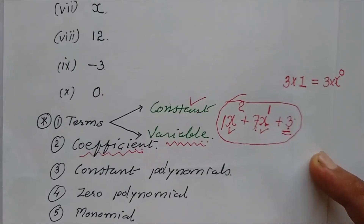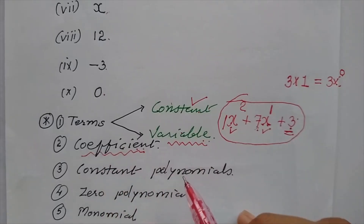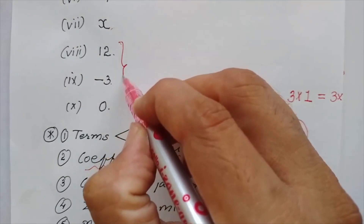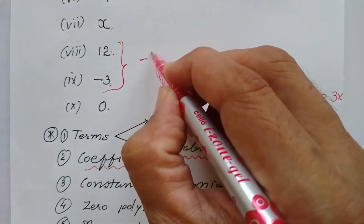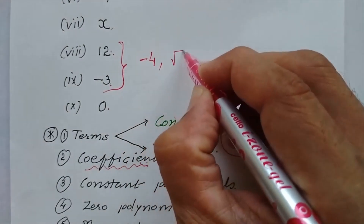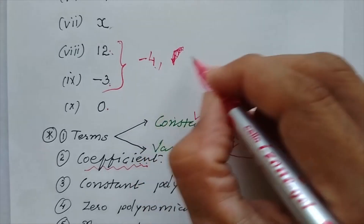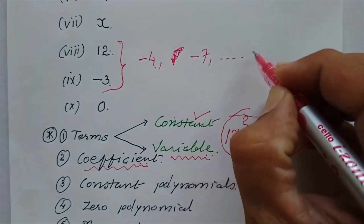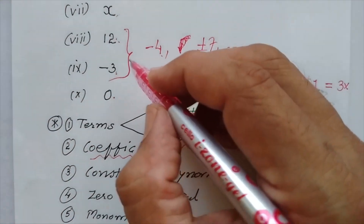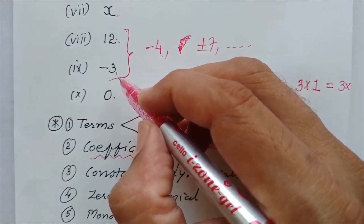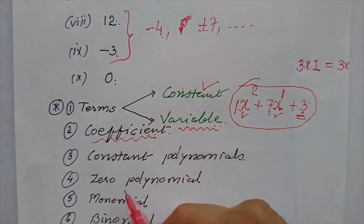Now, constant polynomial. So children, these are the examples of constant polynomial: 12, minus 3, minus 4, minus 7, etc. Any number, plus or minus anything, they are known as constant polynomial. And 0, that 0 is known as zero polynomial.